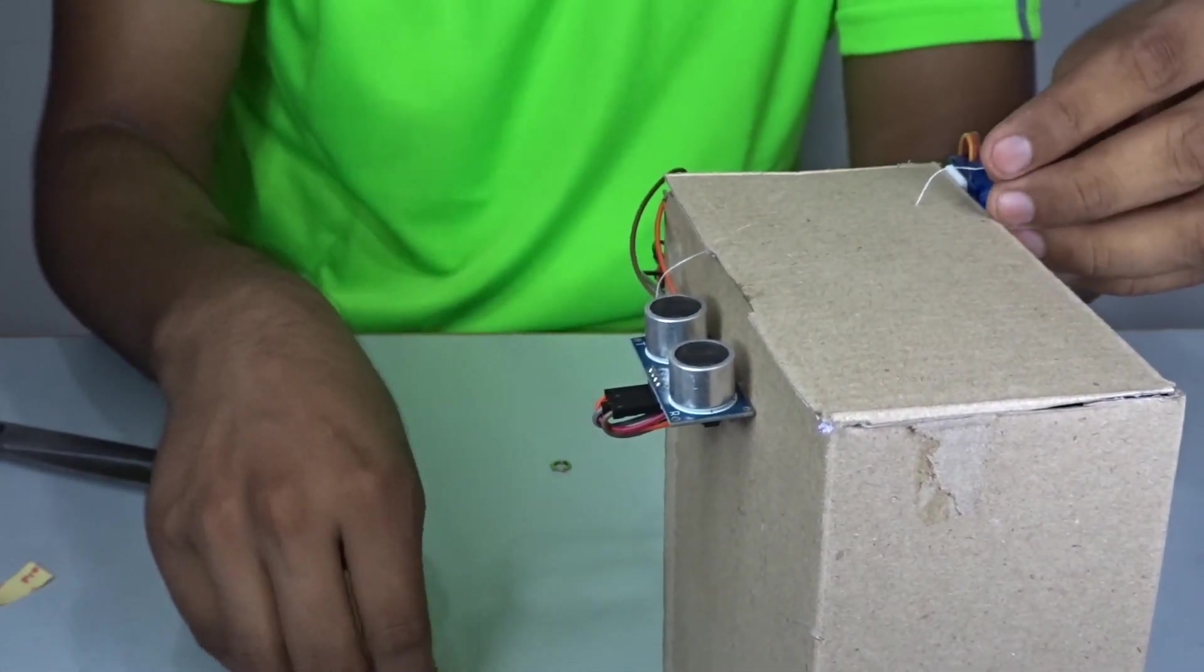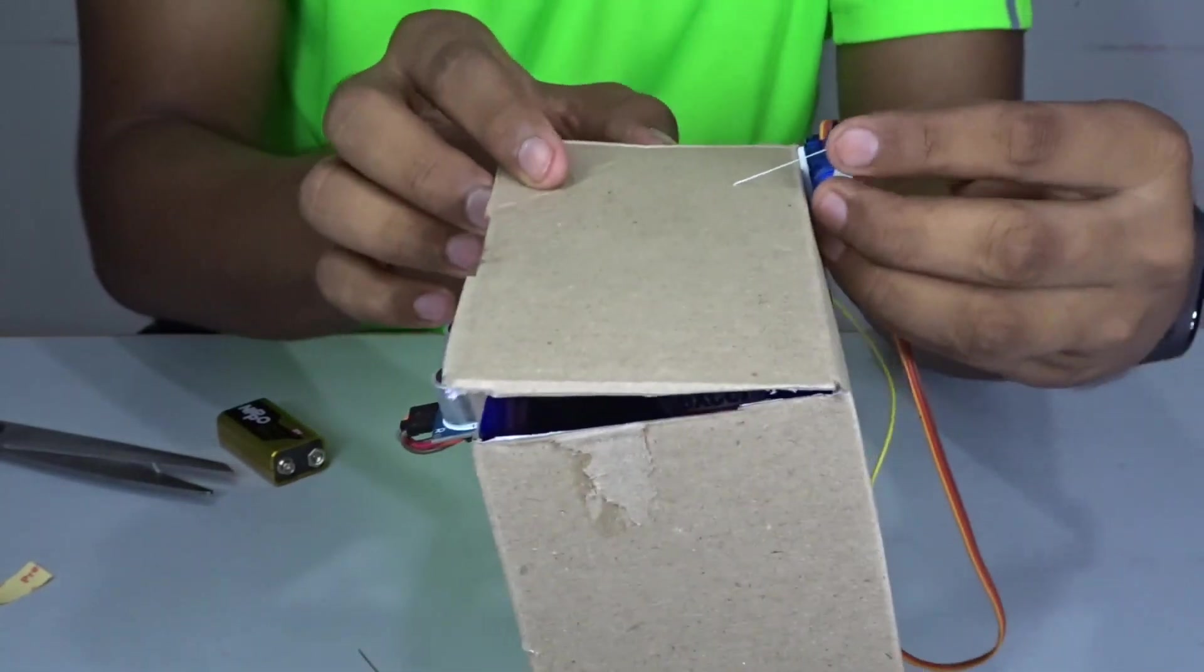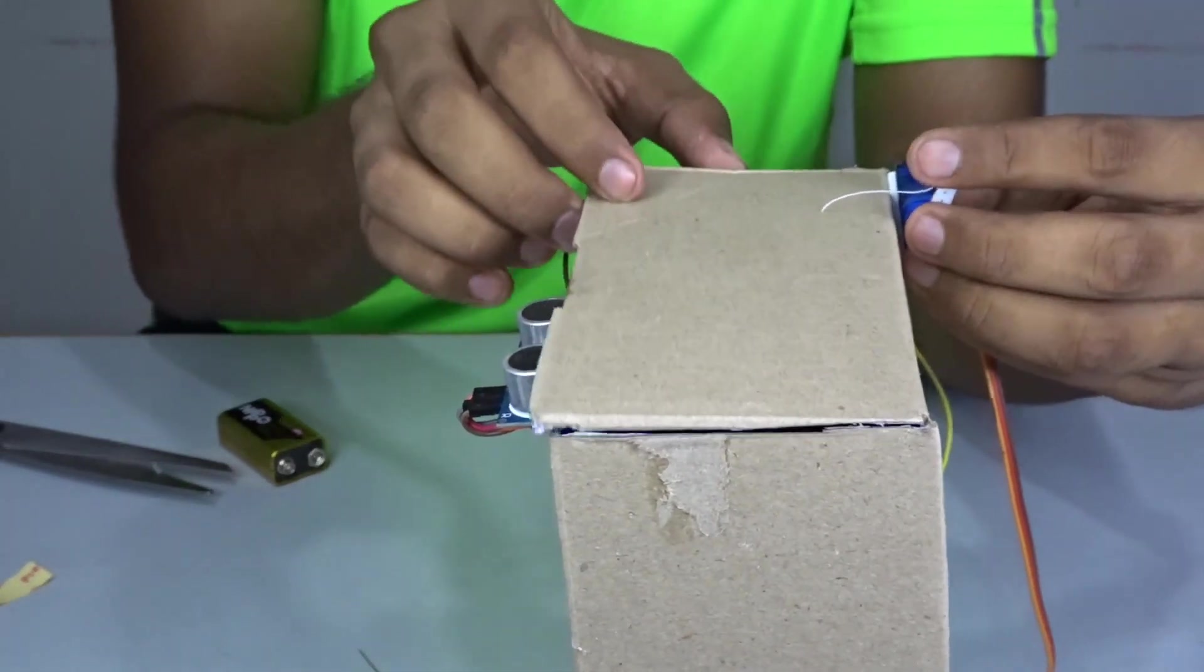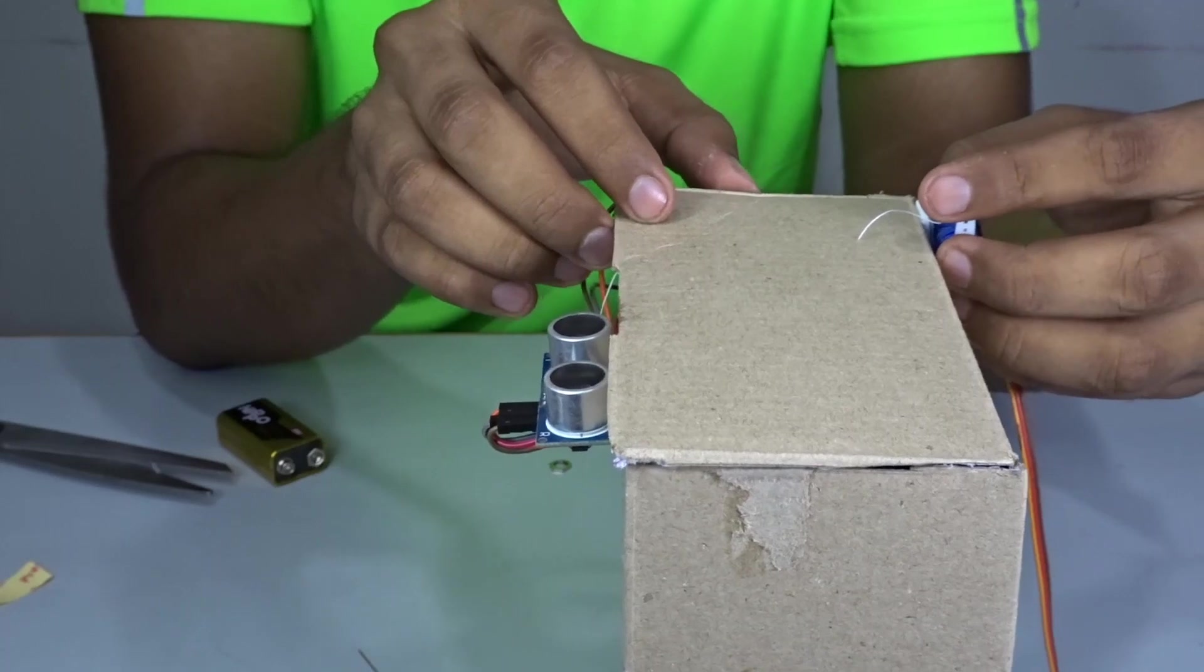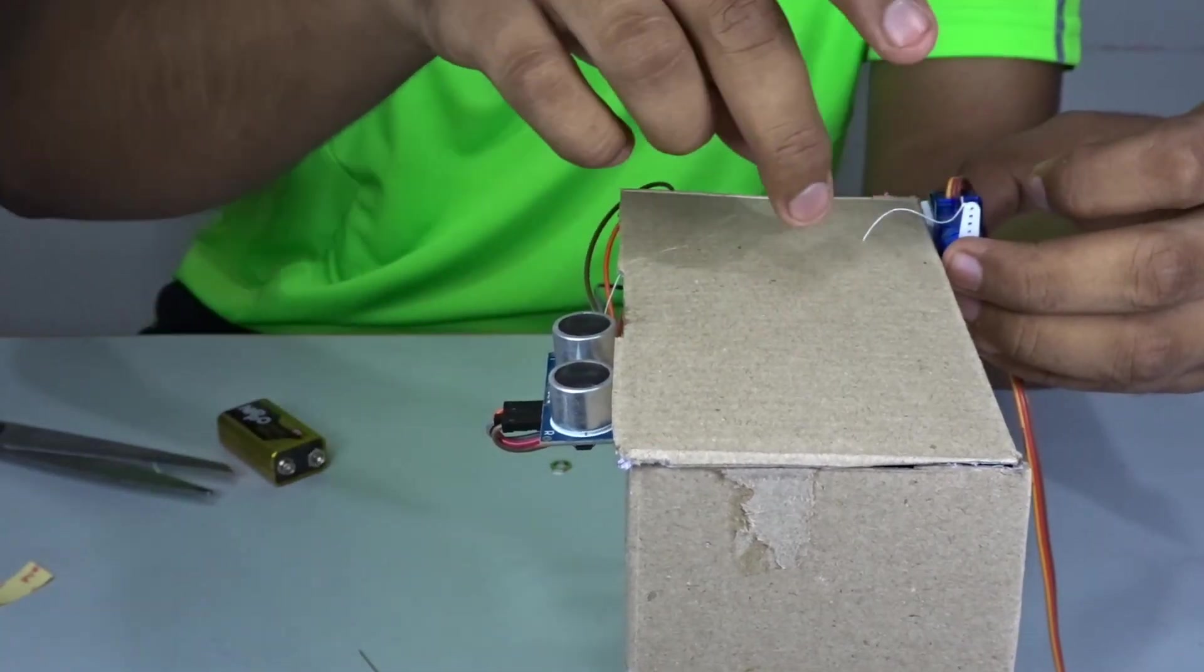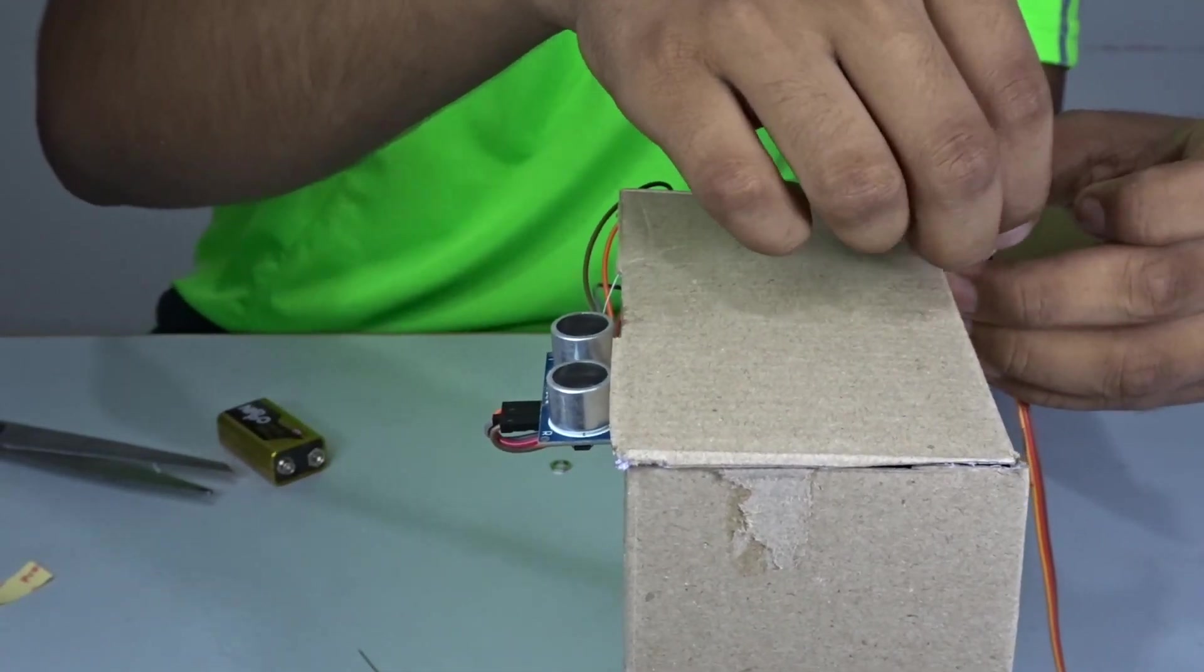So it will act like a pulley system. So when the servo horn will pull, it will go like this and it will go like that to open and close. So now let's fix everything up and let's go ahead and start the coding.